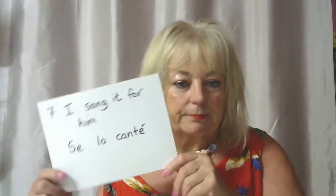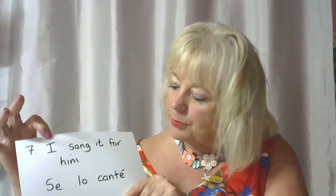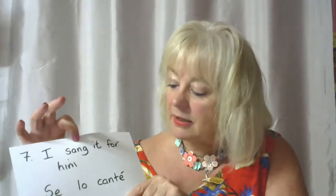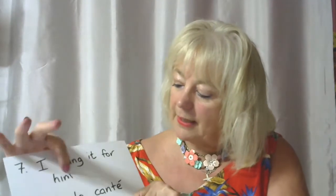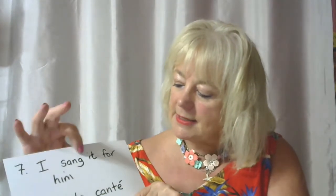Number seven: I sang it for him. Se lo canté. Breaking it down: 'I' — the person; 'sang' — the verb, past tense, pretérito, irregular from 'sing'; 'it for him'. I sang it for him. Se lo canté.